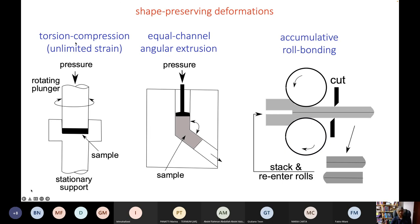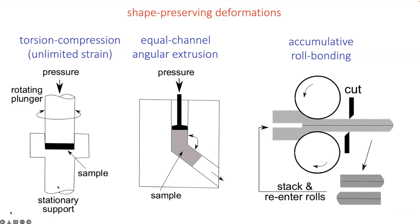This is a process called torsion compression where you have a small sample between a rotating and a stationary support, and there's also pressure applied, so it's torsion and compression. The advantage of this process is that you can apply very large strains because there's no possibility of the sample breaking. Strains of the order of 16 have been reported for some of the samples deformed using this process.